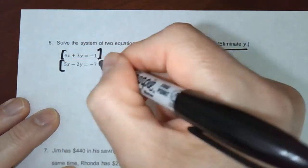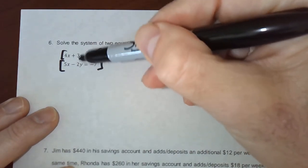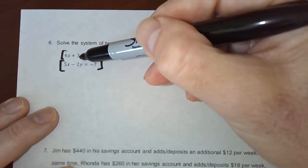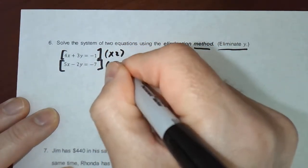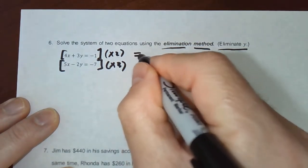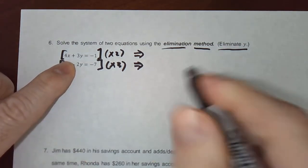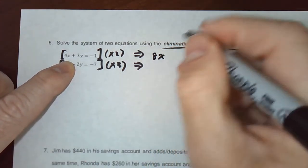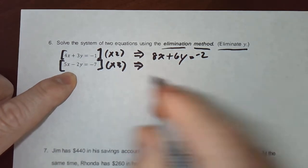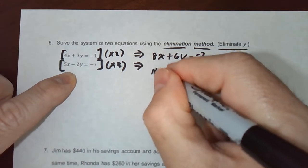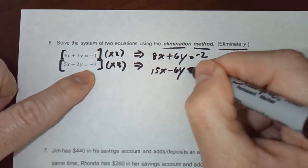So what do you think we have to multiply the two equations by? We have 3 and negative 2. Well, they are the opposite sign, which is great. But I'm going to need to multiply this 3 by 2 and multiply this 2 by 3. So I will put times 2, times 3. And we'll get two new looking equations that will be equivalent to these two. So multiplying the first one by 2 I get 8x plus 6y equals negative 2. The second equation multiplied by 3 will give us 15x minus 6y equals negative 21.